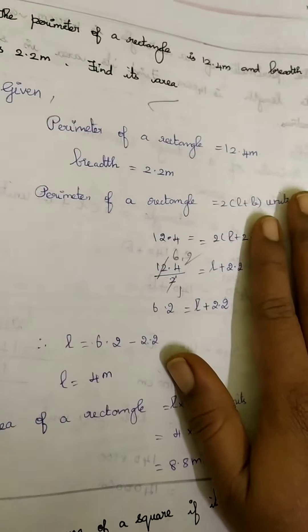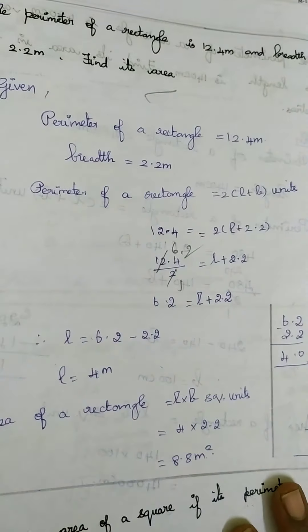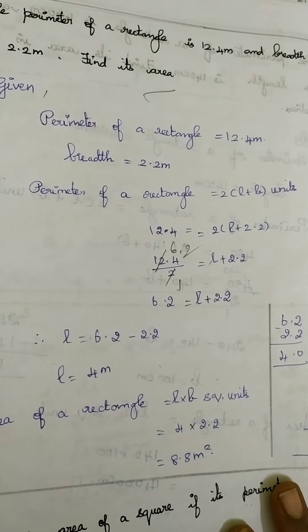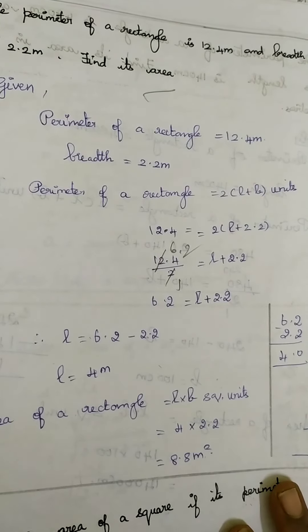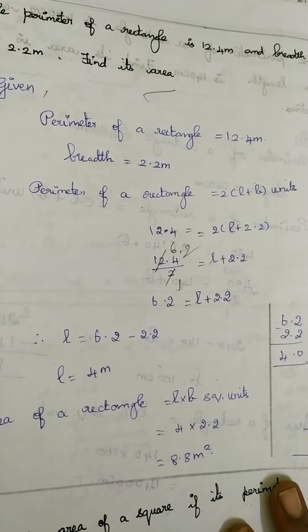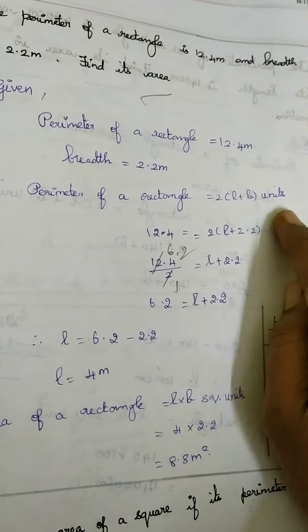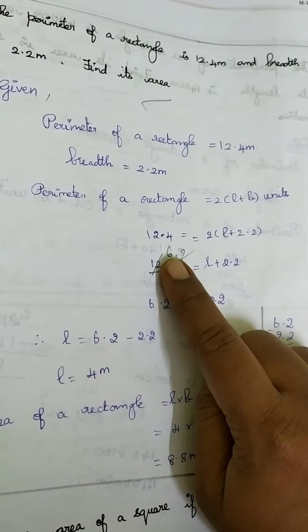Now given perimeter of a rectangle is equal to 12.4 meter and breadth is equal to 2.2 meter. We are going to substitute in the formula perimeter of a rectangle.